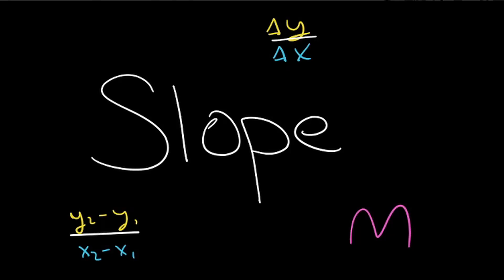Slope. The slope of a line is a number that represents how steep a line is. It is represented by the letter m. So m is equal to slope.